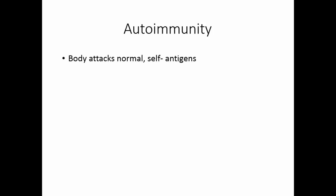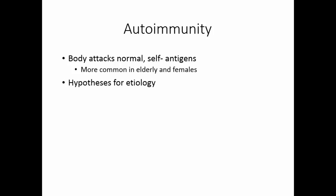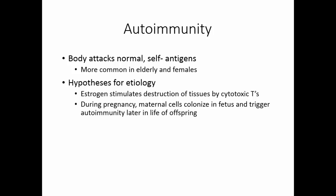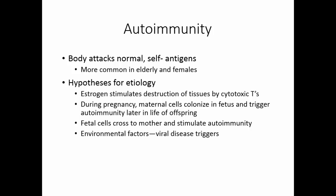In autoimmunity, the body attacks normal self-antigens. This is more common in elderly individuals and in females. There are several hypotheses for why the body develops autoimmunity. One is that estrogen stimulates the destruction of tissues by cytotoxic T cells, which helps explain why women are more prone to these diseases. A second is that during pregnancy, maternal cells will pass to the fetus and colonize it, more often in daughters than in sons, setting the daughter up for autoimmunity later in life. A third hypothesis is that fetal cells cross to the mother and stimulate autoimmunity in the mother. Some may be caused by environmental factors — a number of viral diseases seem closely associated with the development of autoimmune disease. Genetic factors may also play a role, as certain MHC genes are common in people who have autoimmune diseases.